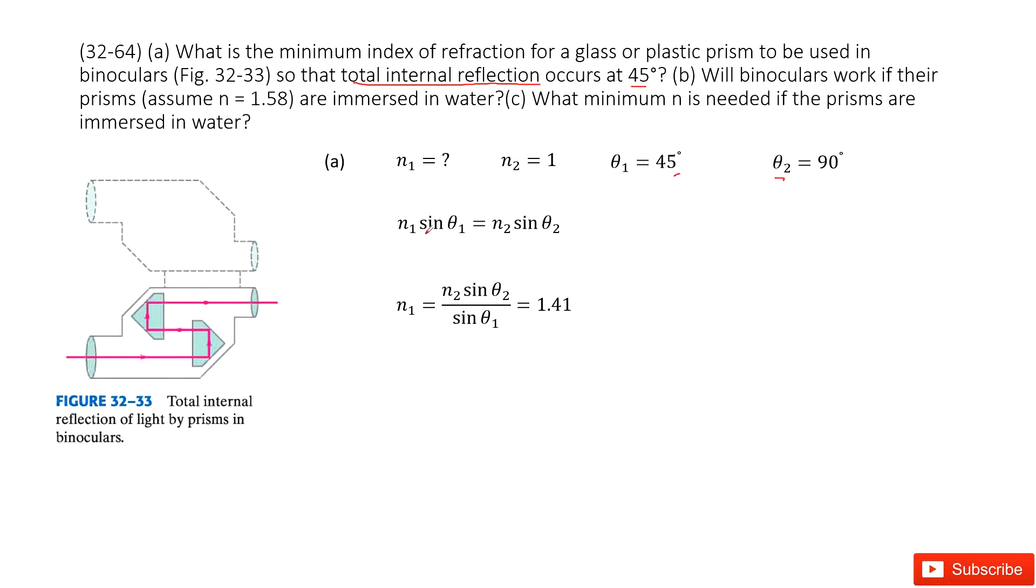We write down Snell's equation: n1 sin theta 1 equals n2 sin theta 2, and convert the equation. We get a function for n1, input all the given quantities, and we get the answer.